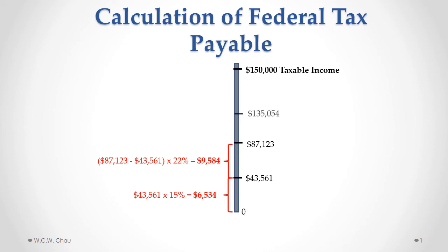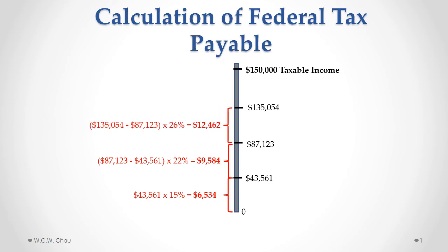Our third layer of the cake brings us up to $135,054, which is taxed at a rate of 26%, which gives us tax of $12,462 for that layer.